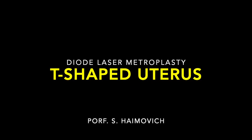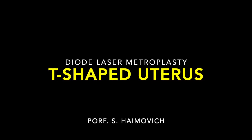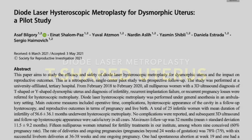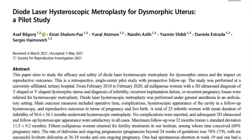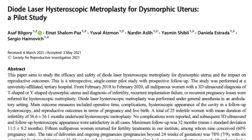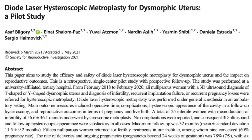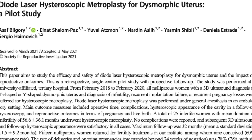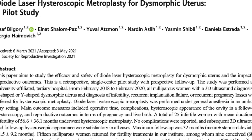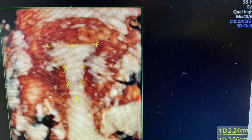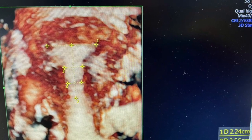T-shaped uterus is a congenital anomaly associated with long-term infertility. Treatment is by surgical correction of the defect. Two months ago we published our results of diode laser metroplasty for T-shaped uterus. We present a case of a 39-year-old woman.